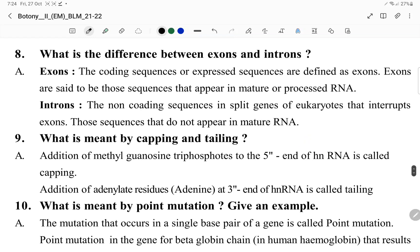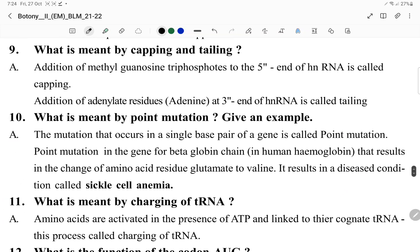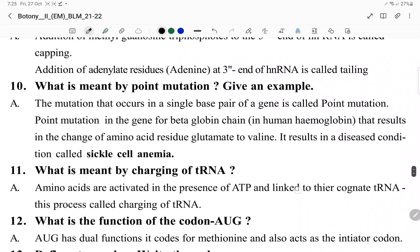Exons and introns. Exons are coding sequence or expressed sequence. Exons form matured mRNA. Introns are non-coding sequence of split genes. After maturation of mRNA, we add methylated guanosine triphosphate to the 5 prime end for capping. At the 3 prime end, we add 300 adenylation residues for tailing.